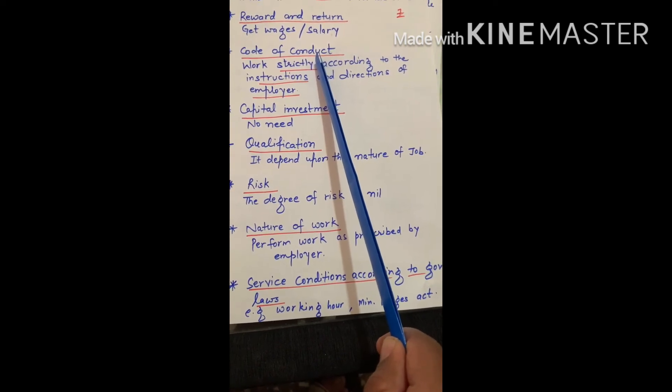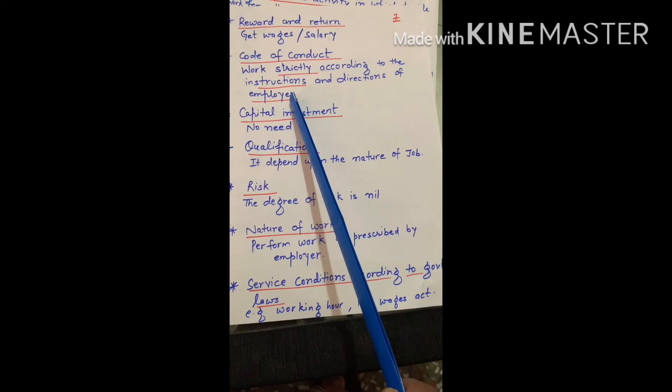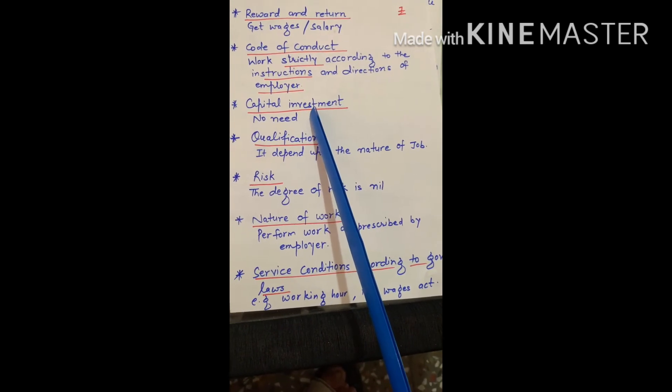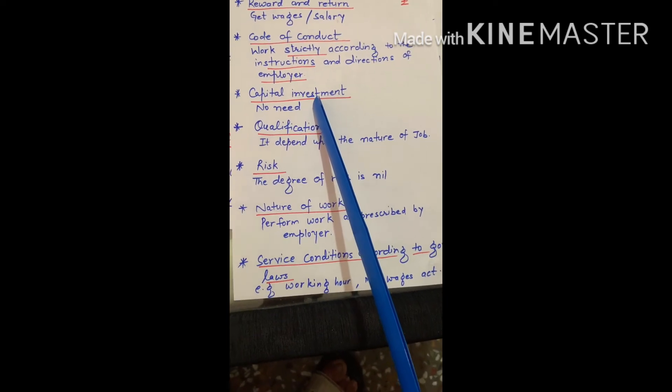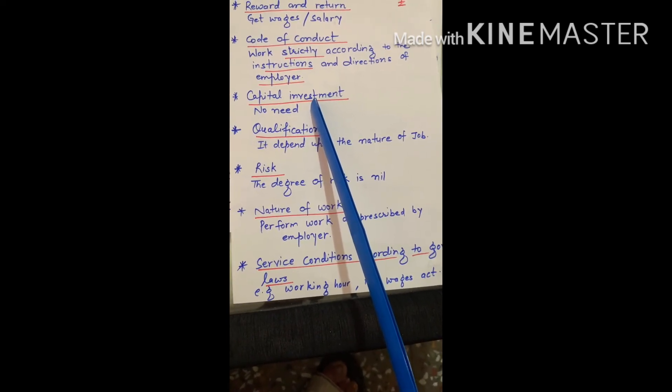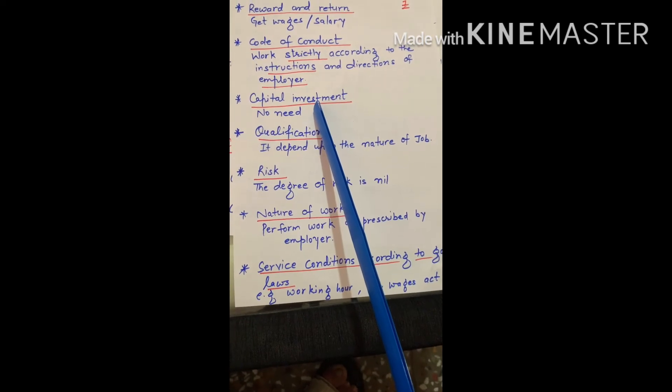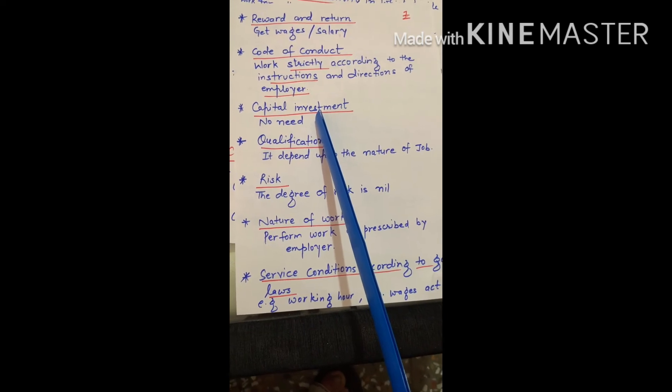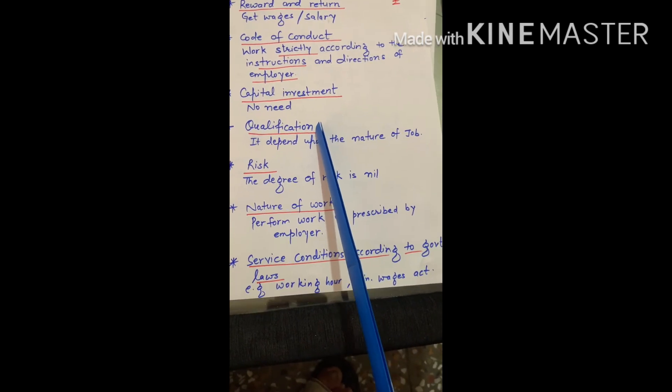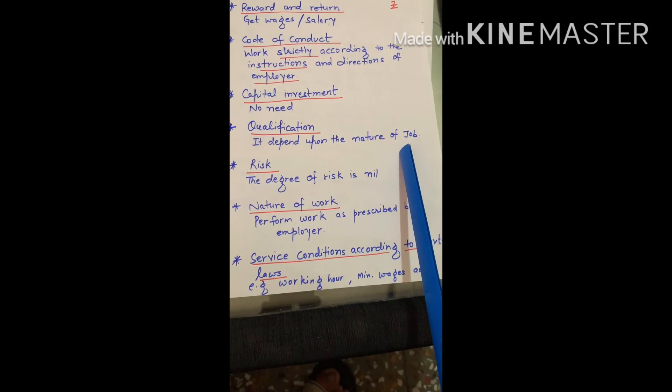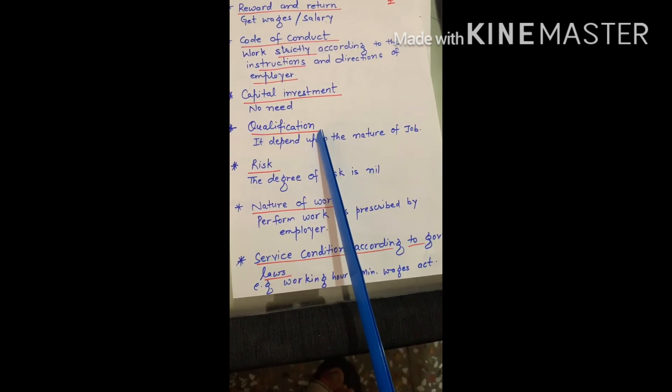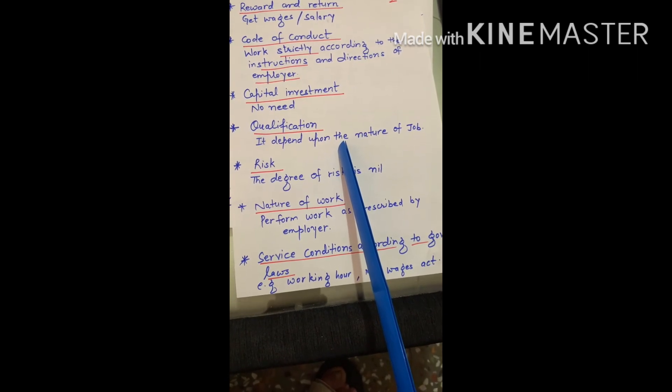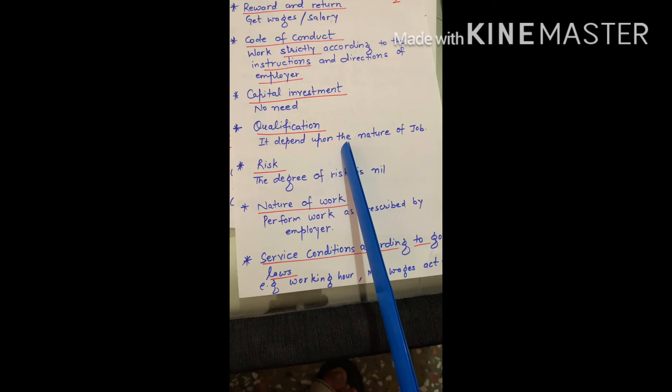Capital investment: in employment, employee is not investing any capital because all investment is done by employer. Qualification depends on nature of job. If you want to hire a peon, 10 plus 2 is sufficient. But if you want to hire higher authority like manager, we require higher degree like MBA.